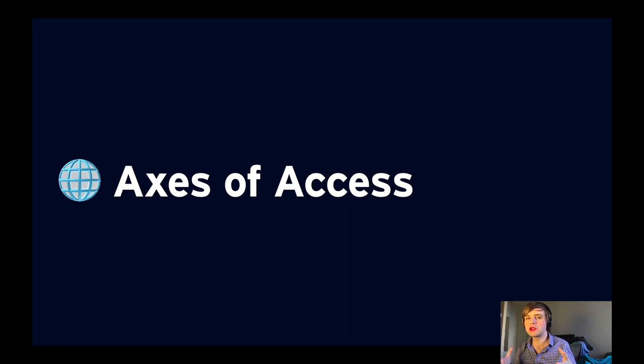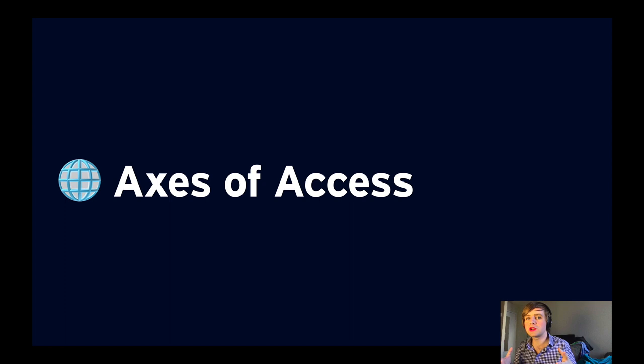There are multiple axes of access that you're looking to cover to make a truly universal design. The ones I'm going to cover today are vision, hearing, physical and motor, literacy and learning, locality, and inclusion. So let's start with vision. Vision impairments include blindness, color blindness, forms of vision loss, and challenges in situations that make seeing the screen uncomfortable or difficult, like Elle's chronic migraines.